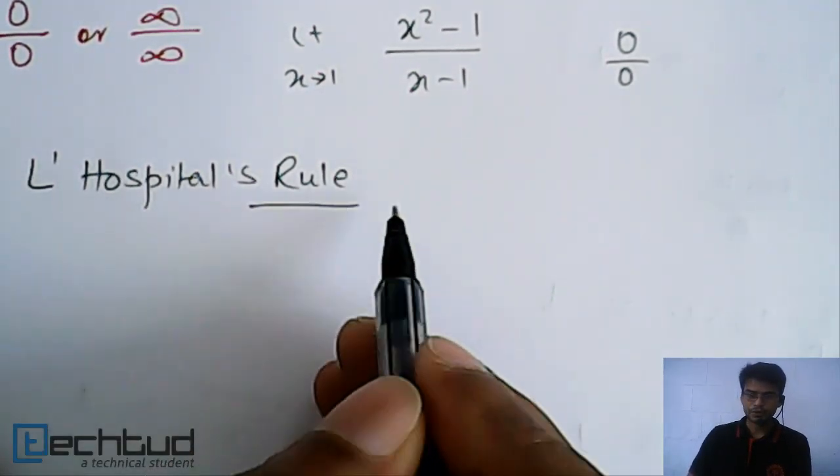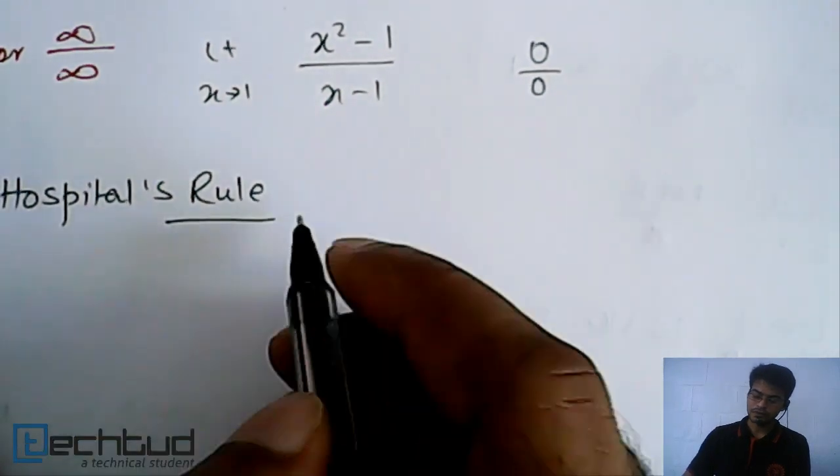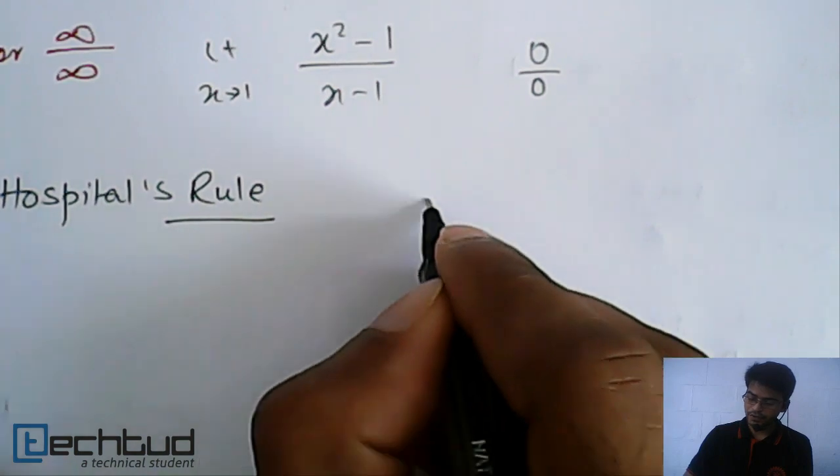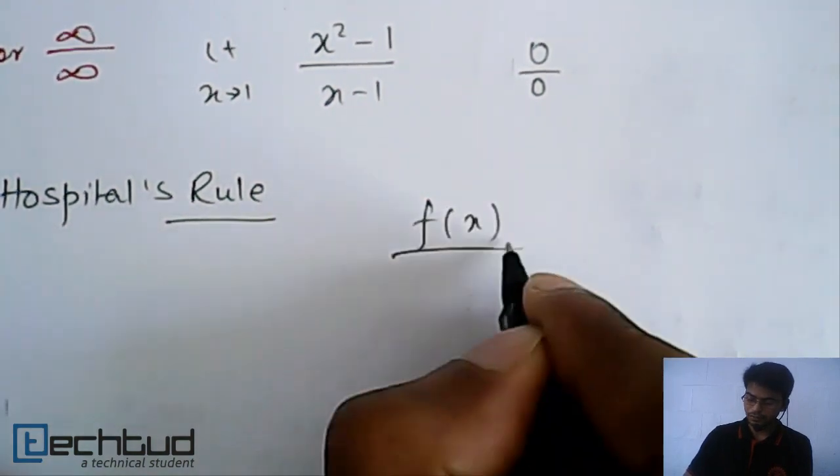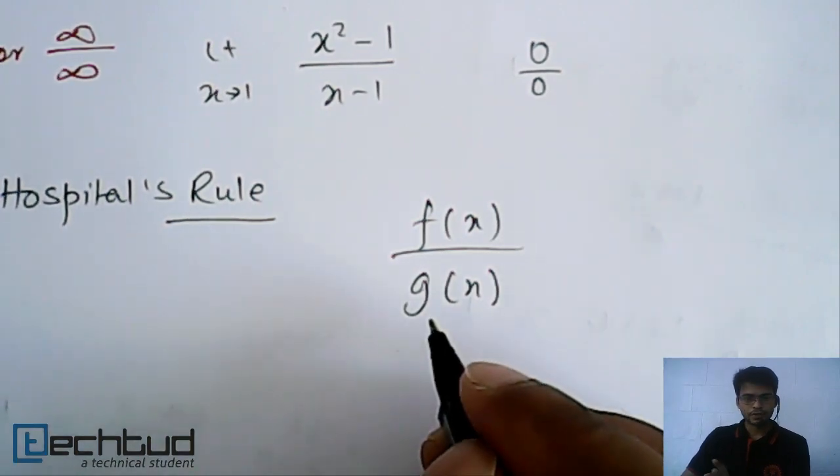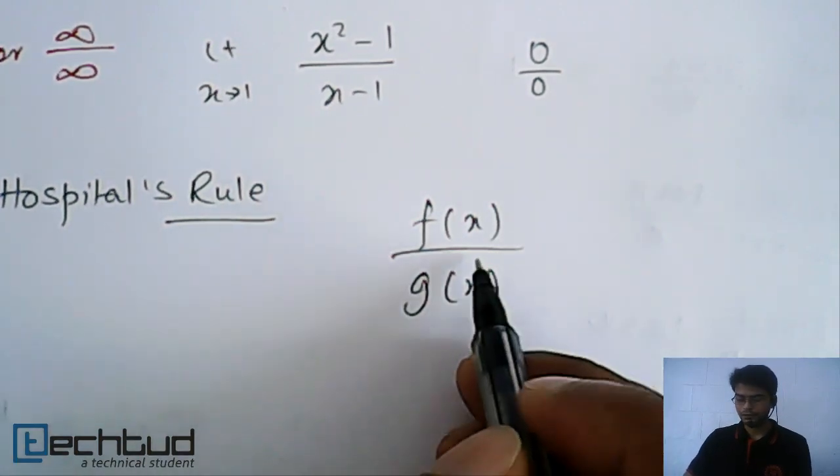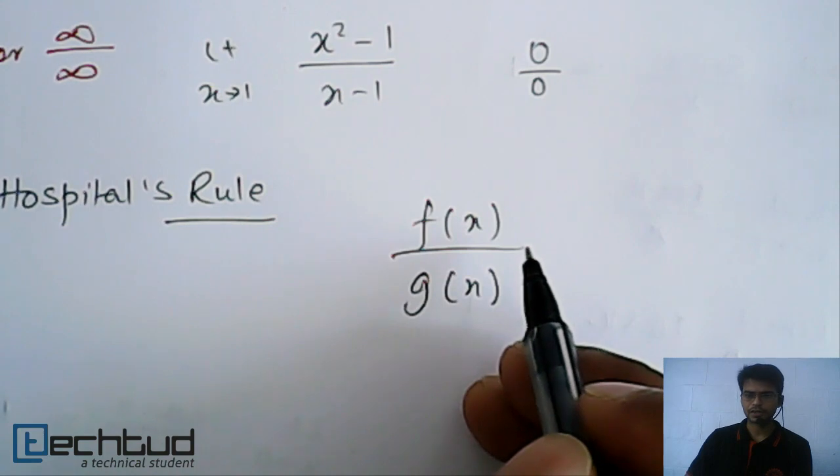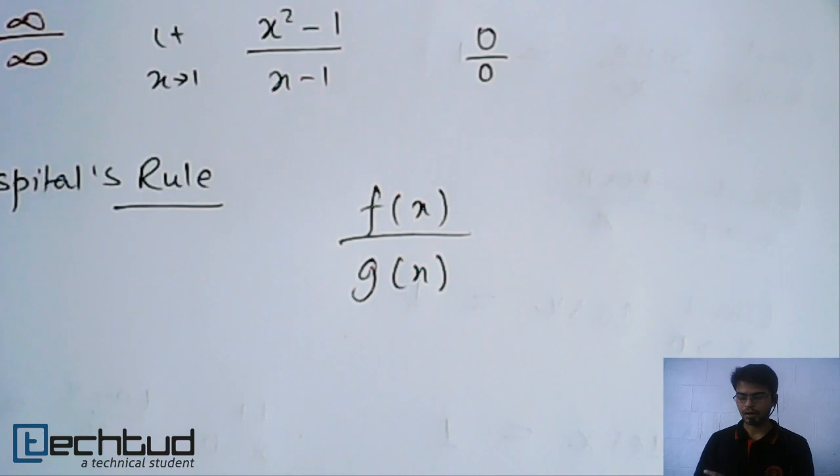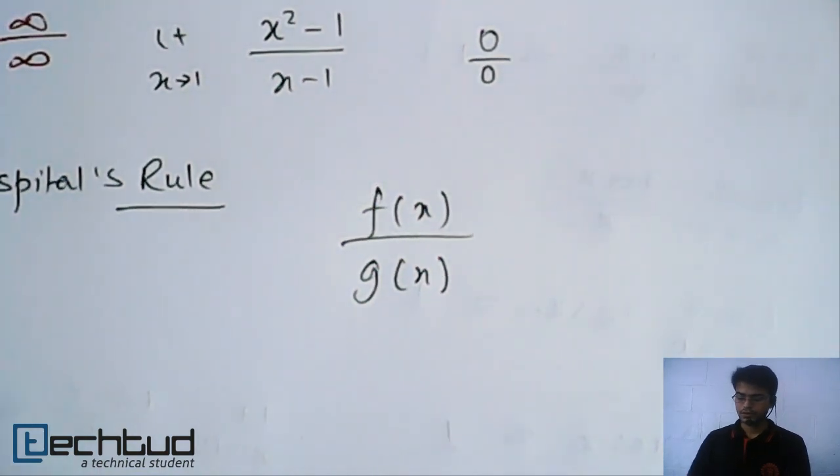So L'Hopital's rule, what do we do? In function, let's say if it is f(x) upon g(x), and it is 0 by 0 or infinity by infinity, we differentiate both numerator and denominator. And we try to take whether it is now out of indeterminate form.